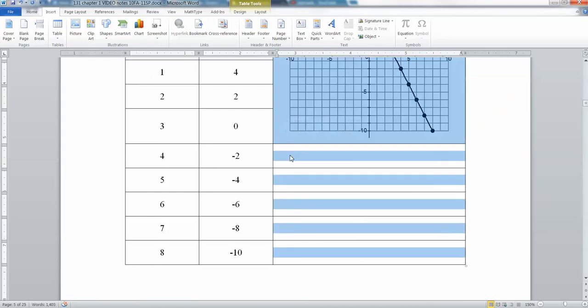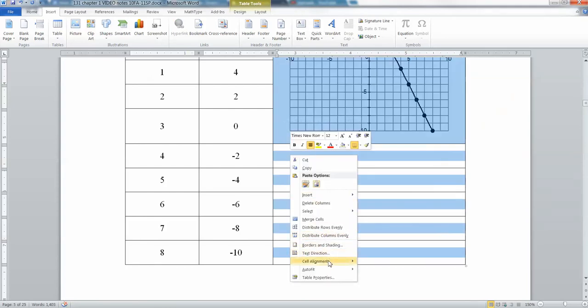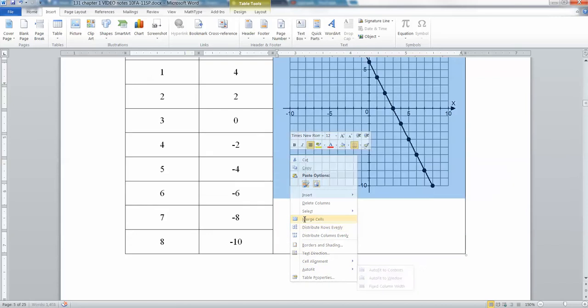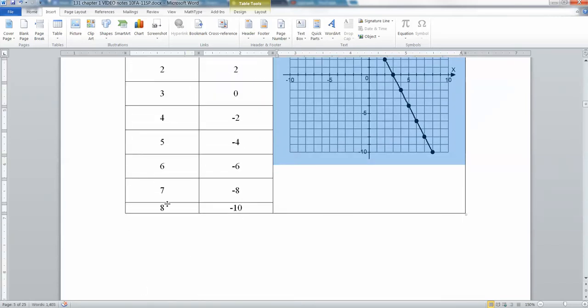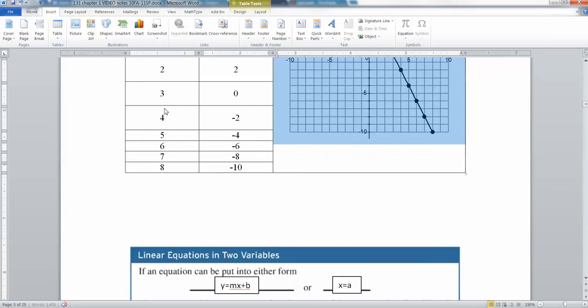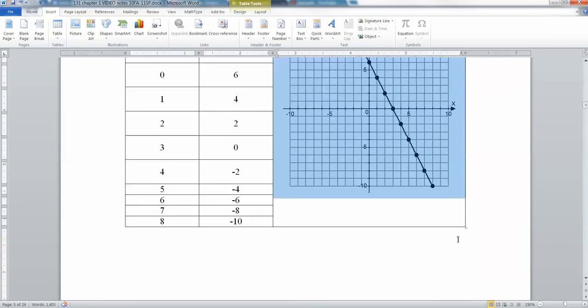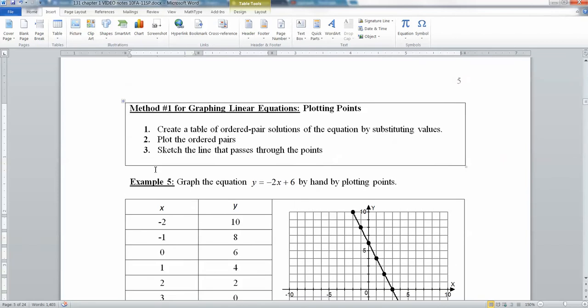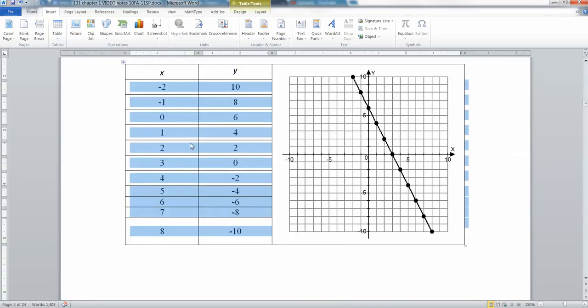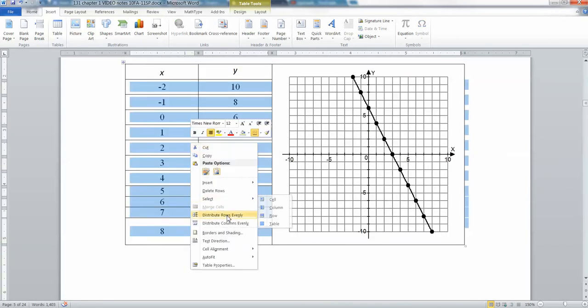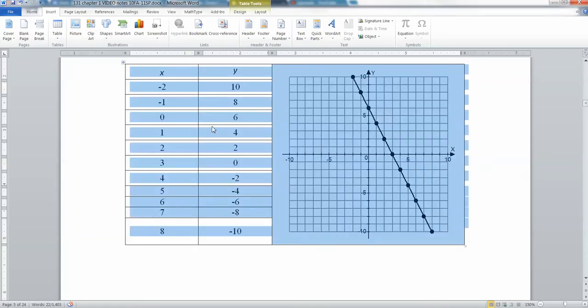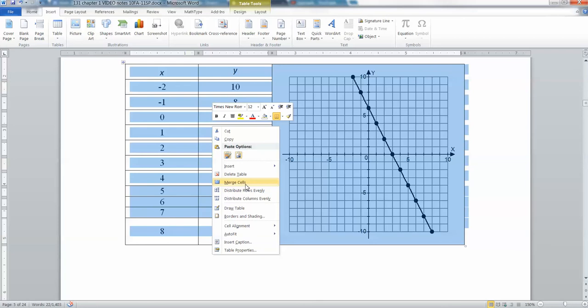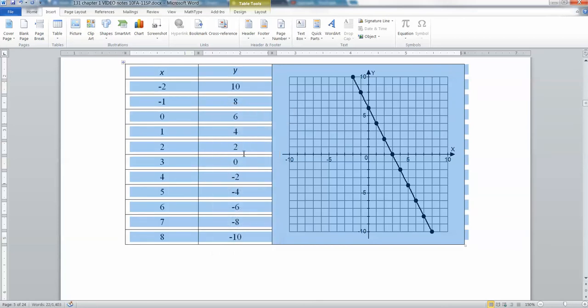And once you get the pattern going, which is what I was about to say, there's another way to deal with this, which is you can see that there's a pattern. And we're going to come back to that pattern in a little bit. But it's basically, every time my x increased by 1, then my y went down by negative 2. That's because negative 2 is equal to my slope.